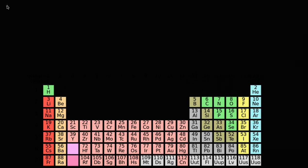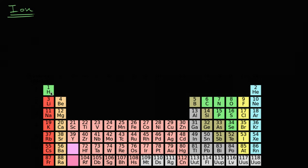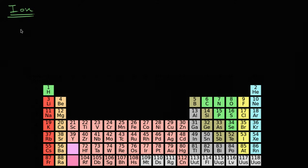Let's talk about a word you might have heard: ion. Let's talk about what it is, and then we'll talk about trends in the periodic table on how hard it is to make something an ion — in particular, how hard it is to make something a positive ion. An ion is just an atom or a molecule that has charge, and it'll have charge if the protons are not equal to the electrons.